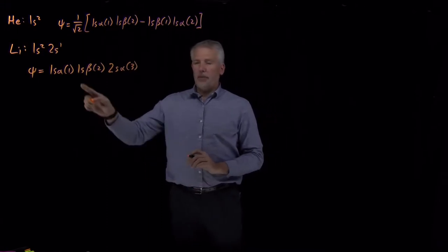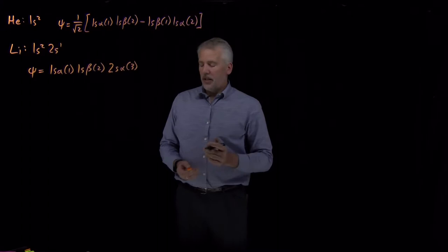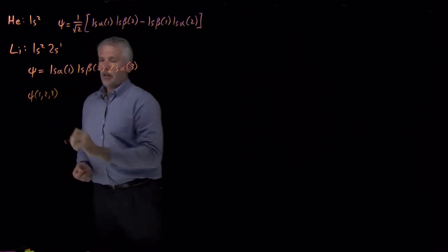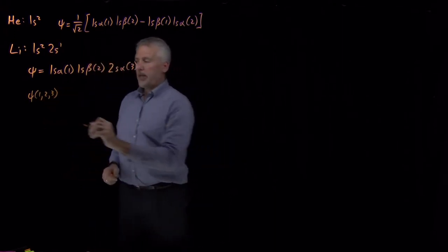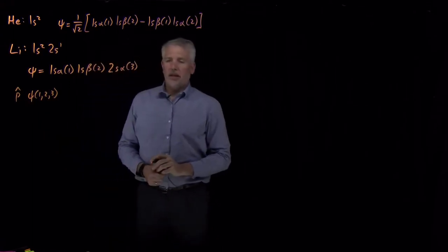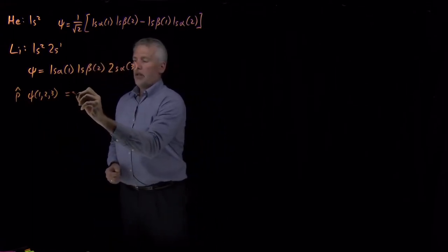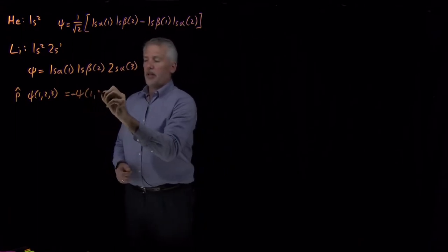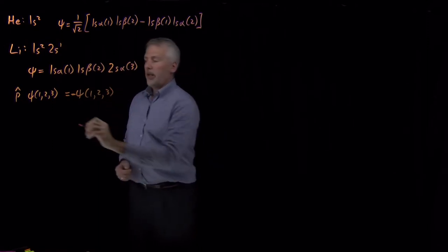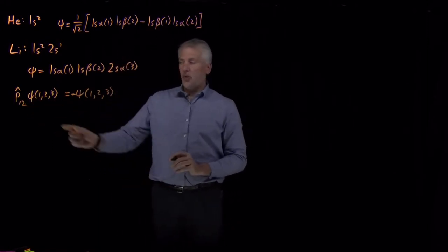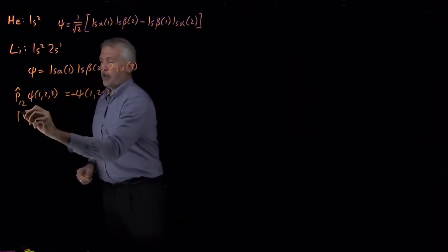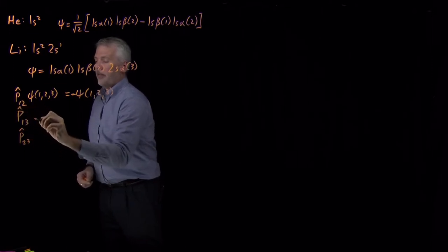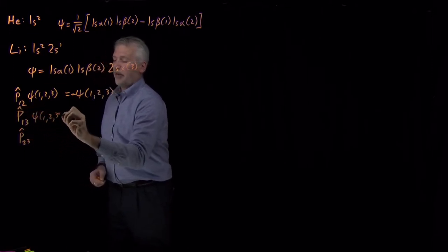In order to make this a properly anti-symmetrized function, we need to make sure that if I have a function of coordinates of electrons 1, 2, and 3, if I exchange any two electrons, I have to get back the negative of the function I started with. In particular, if I exchange electrons 1 and 2, or electrons 1 and 3, or electrons 2 and 3, any of those exchanges must give the negative of the original wave function.